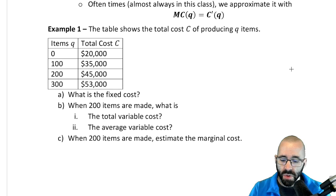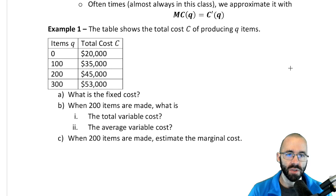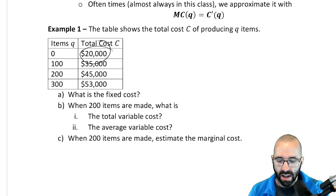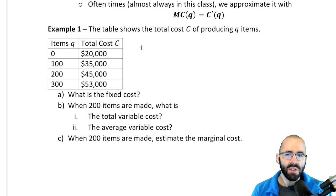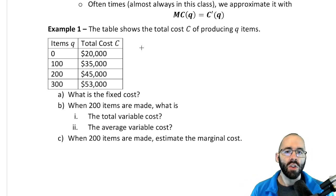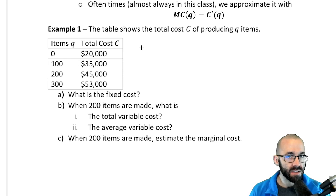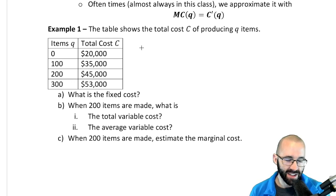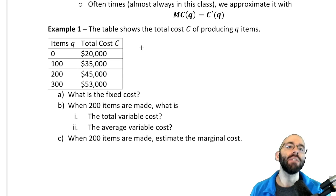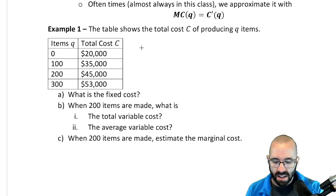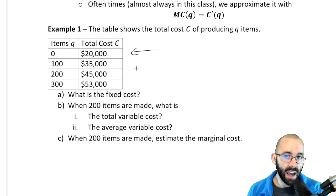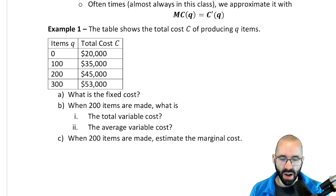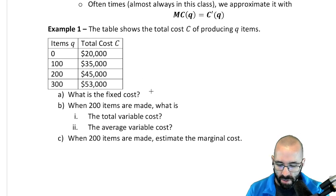Let's do an example. We see a table showing the total cost C of producing q items. If we produce no items it's $20k of costs, 100 items is $35k, etc. The first question asks: what is the fixed cost? Total cost is a combination of fixed costs and variable costs. Fixed cost is how much we have to pay even if we don't produce any items — the costs we pay regardless of production. From the table, even if we don't produce anything we have to pay $20k, so the fixed cost is $20,000.